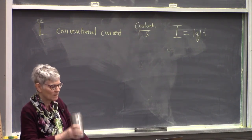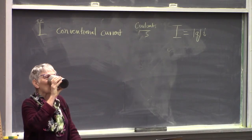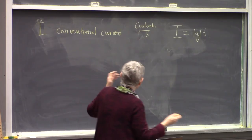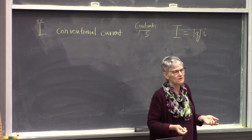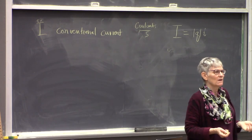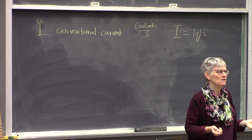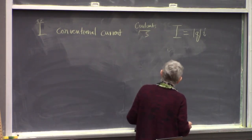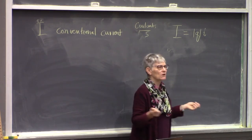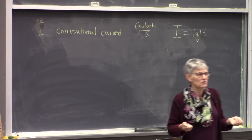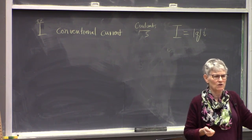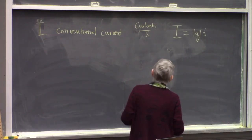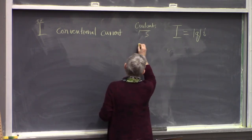So conventional current is what everybody used until the sign was determined. All the meters you used — the voltmeter can also measure current — measure conventional current in units of coulombs per second, which has a name: the ampere, named for yet another French physicist.